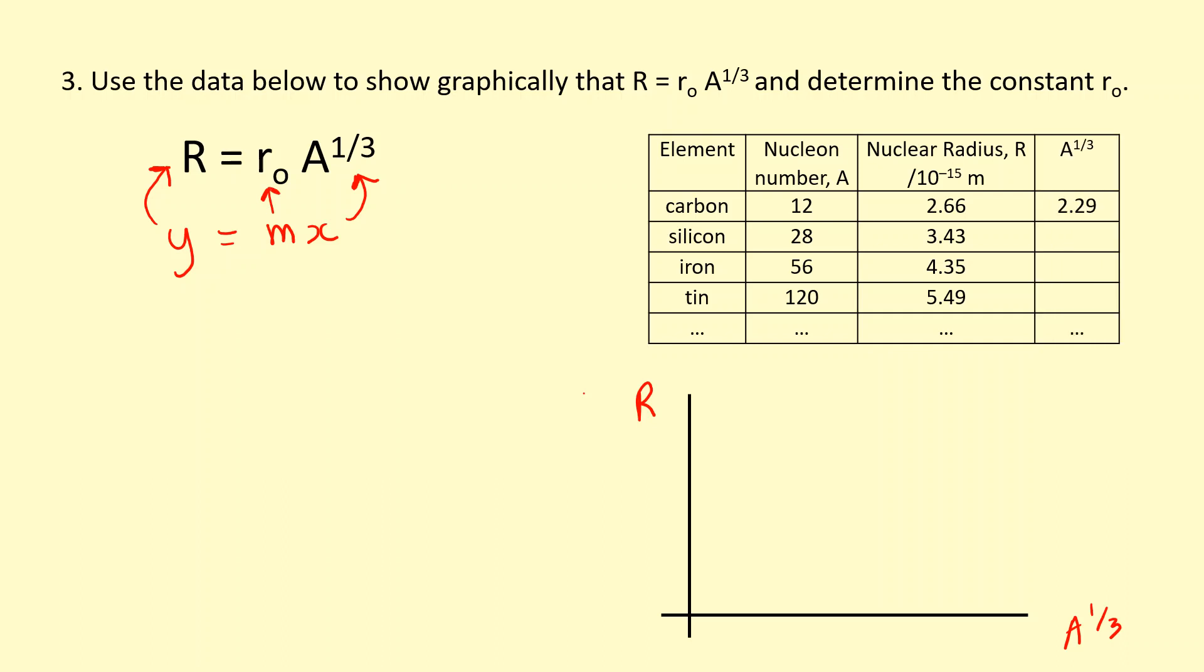First step is to figure out A to the power of a third. Draw on the table there. Figure out the A to the third. So take the 12 and do it to the power of a third. If I plot these points on a graph, I get a straight line which is going through the origin. So the y-intercept should be zero. And the gradient here should equal R naught, which is approximately 1.2 femtometers.